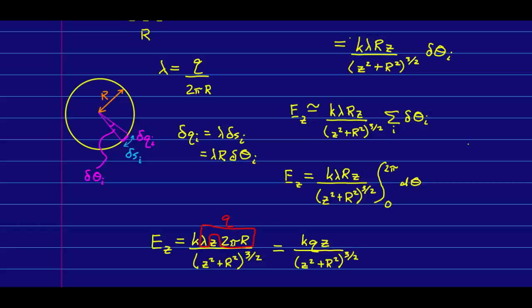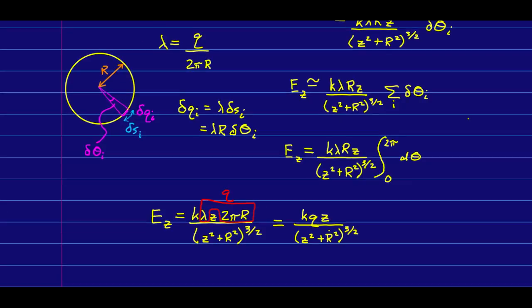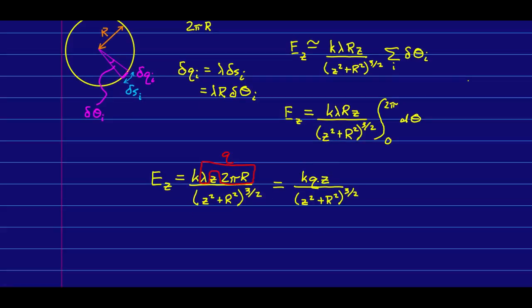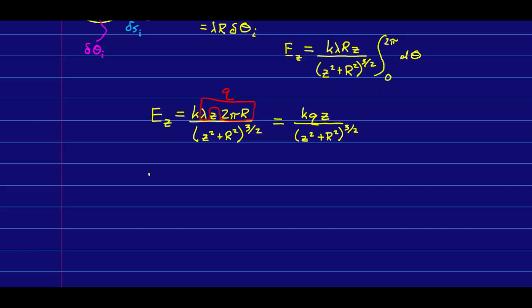And this now is the easiest integral in the world. So, that integral just gives us a 2π and then note that we have lambda 2π r. That's just lambda times the circumference and that's q. And so, we get this expression. I'm going to leave you to check the units and I'm going to point something else out.